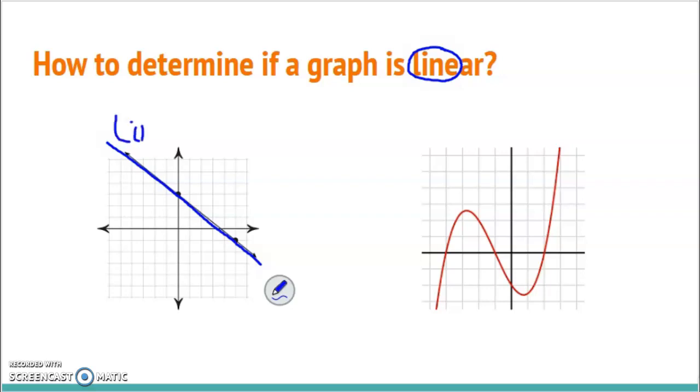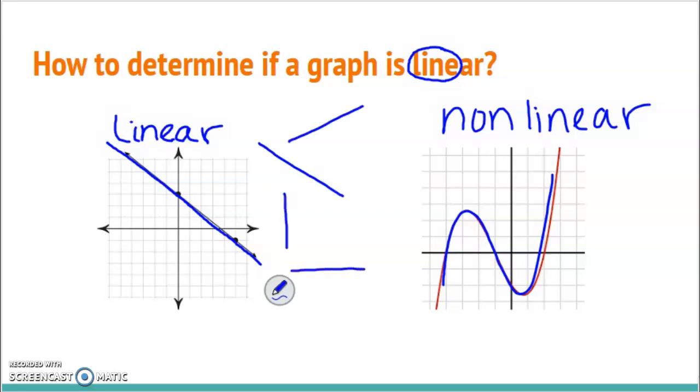So this one would be linear. Over here, notice there are curves to this graph, so this one would be non-linear. Anytime you have a straight line, whether it is slanting this way or that way or straight up and down or horizontal, these are all linear graphs.